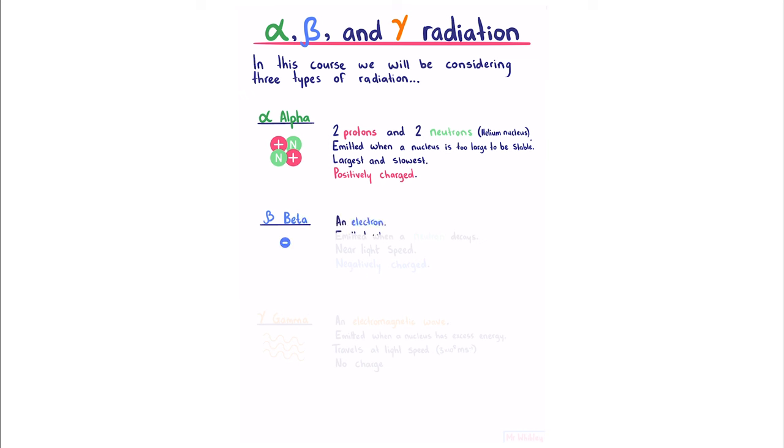Beta radiation is an electron which is emitted when a neutron decays. They travel near the speed of light, and since it's an electron, it's negatively charged.